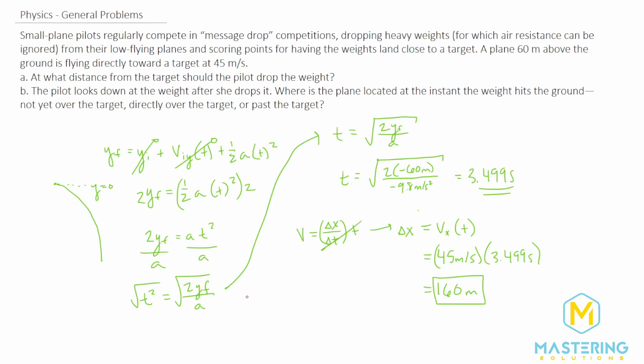Now for part b conceptually we can think about this for the answer because we just talked about how the velocity right here the 45 meters per second is the exact same the entire time the weight is in the air but that's the exact same speed that the plane was going. So assuming that the plane doesn't speed up or slow down after she drops the weight it will be directly over the target because right when the weight hits the bullseye the plane and the weight will be directly above each other.